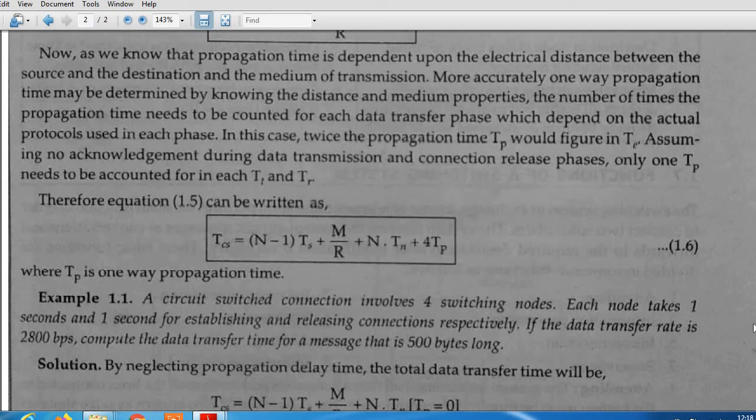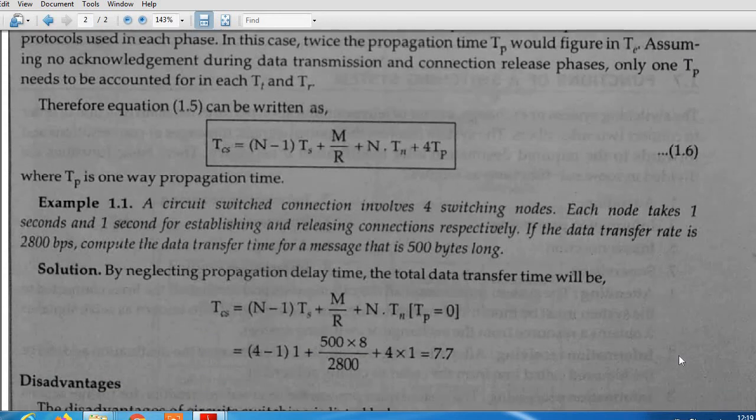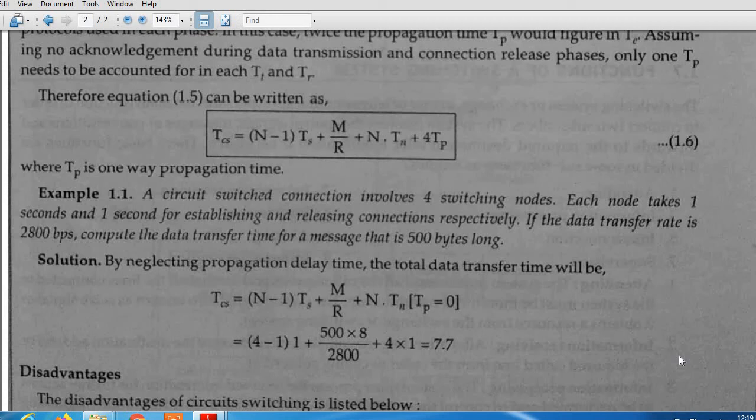Based on this formula, we have one numerical. A circuit switched connection involves 4 switching nodes. Each node takes 1 second for establishing and releasing connections respectively. If the data transfer rate is 2800 bps, complete the data transfer time for a message that is 500 bytes long. We have to find total time. Here Tp, the propagation time, is not given, so we can skip that propagation time. If we put all the values, we can easily find that Tcs is 4.27 seconds.